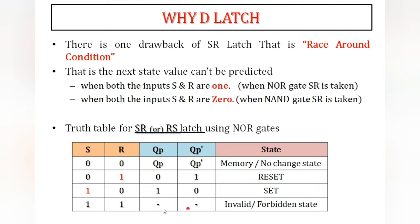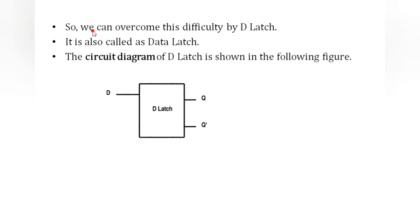When using NAND gates to design SR latch, both inputs must be 0 to get the race-around condition. If you want this clearly, once again check the SR latch. It is clear that D latch is designed to overcome the drawback of SR latch.